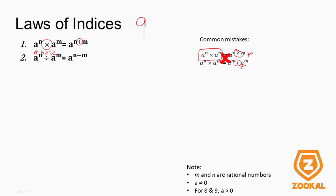Law number 2: A to the power of M divided by A to the power of N equals A to the power of M minus N. Law 3: A to the power of M, all raised to the power of N — you multiply the powers together to get A to the power of M times N.